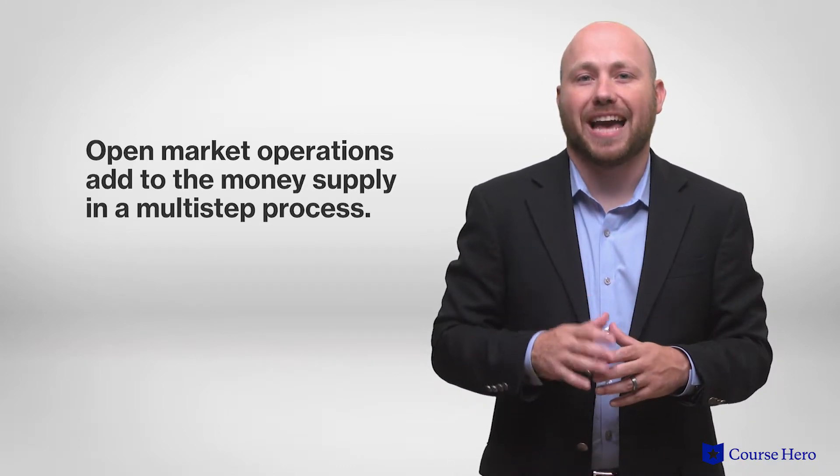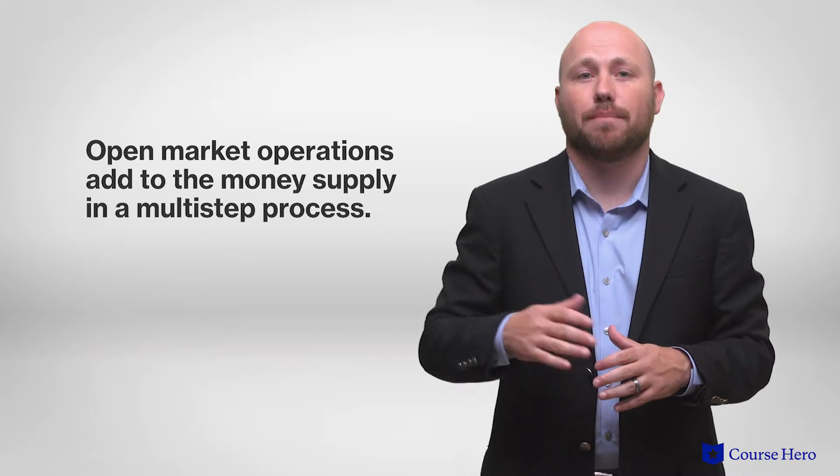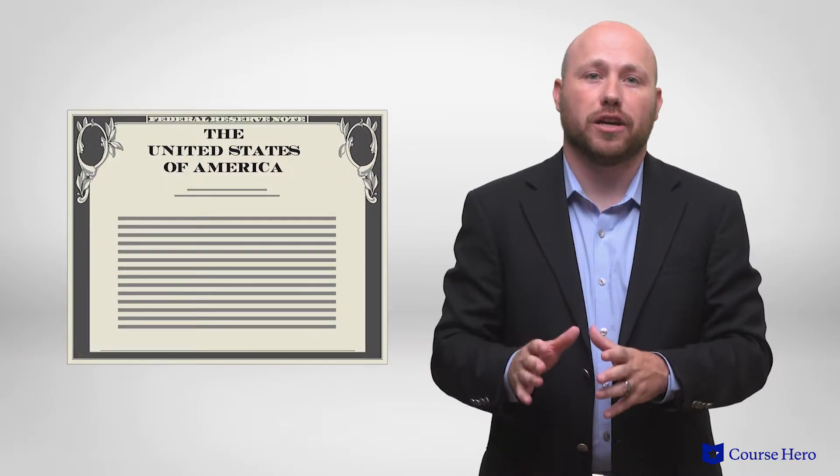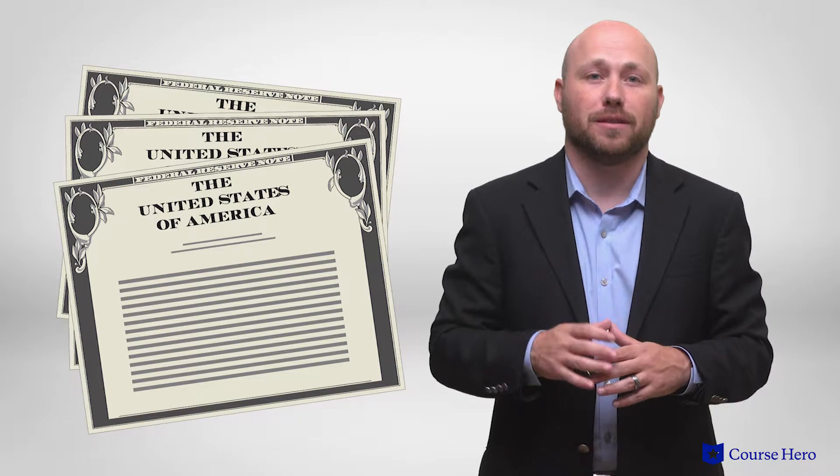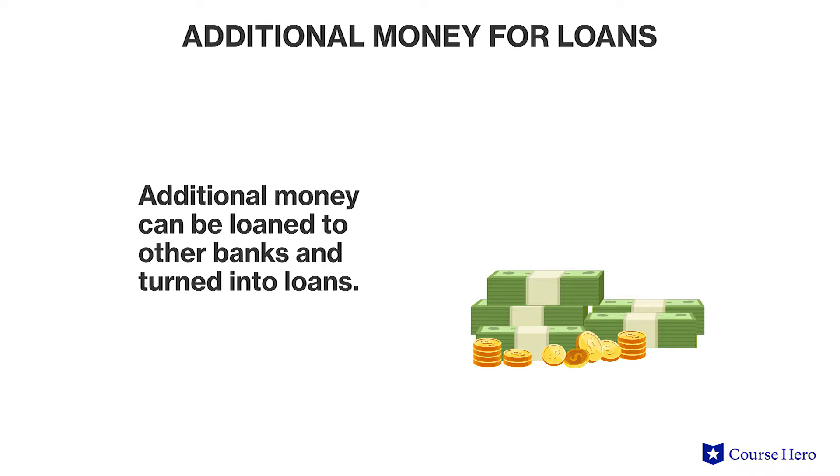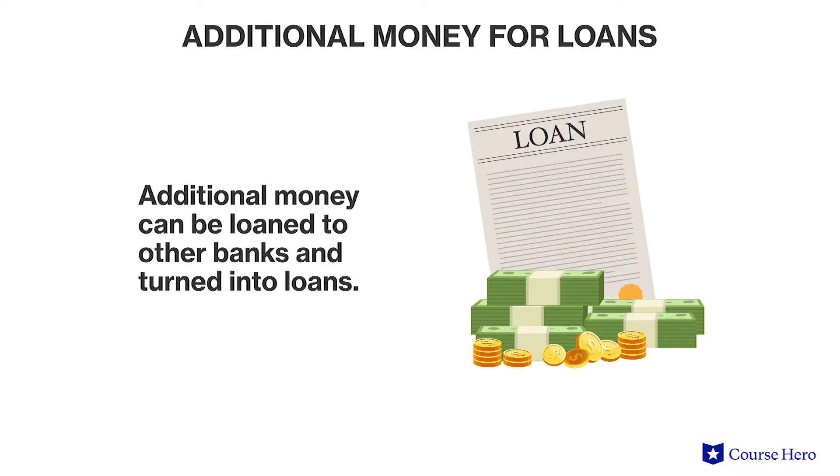Open market operations add to the money supply in a multi-step process. The Fed will draw a check on itself to purchase a predetermined number of T-bills. Although no single bank may be holding all of the securities that are to be purchased, the overall amount created is still entered into the banking system. This additional money can then be loaned to other banks and turned into loans.